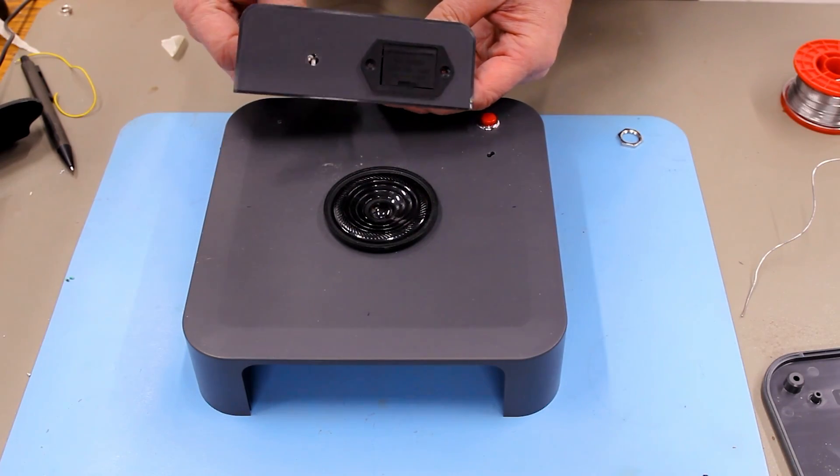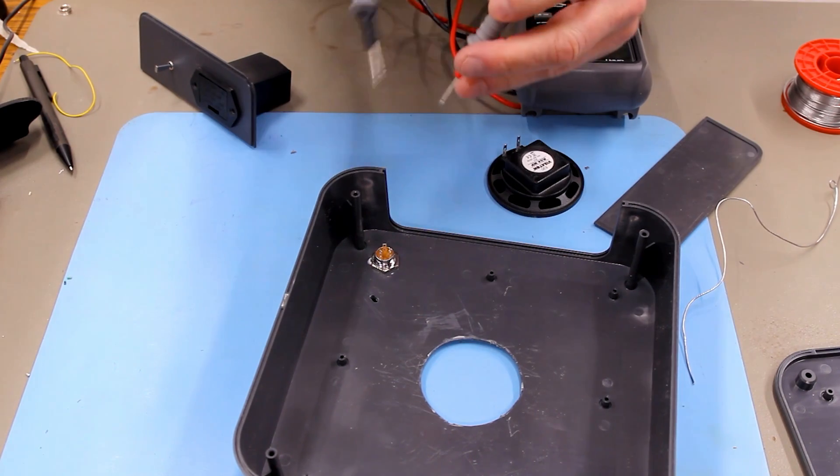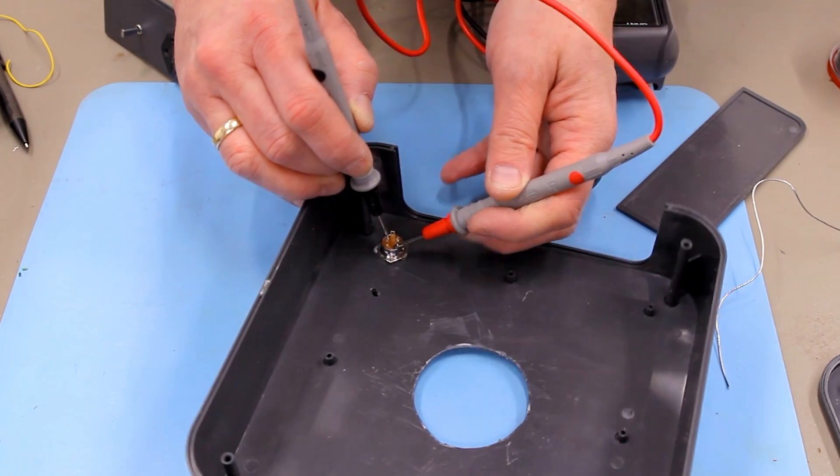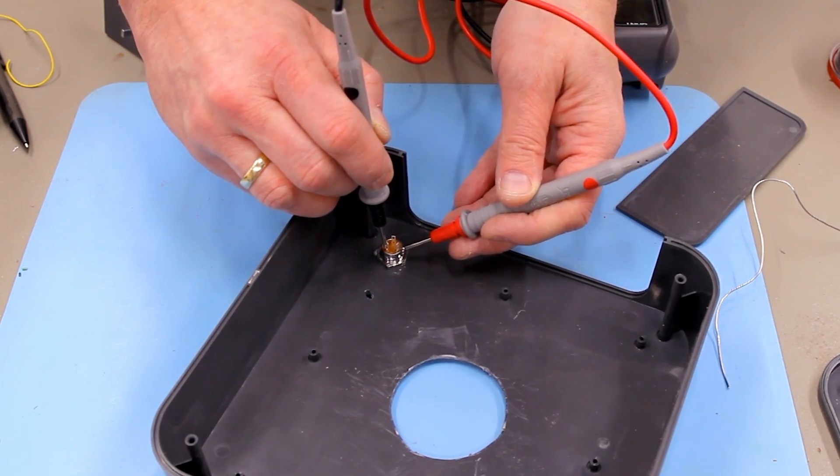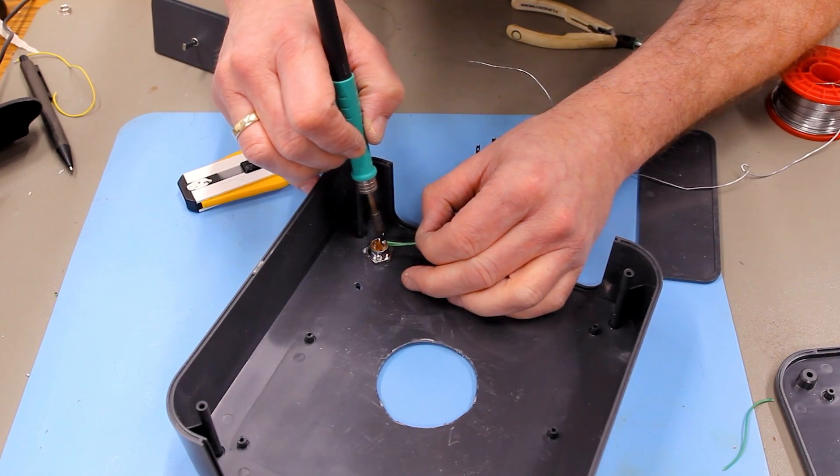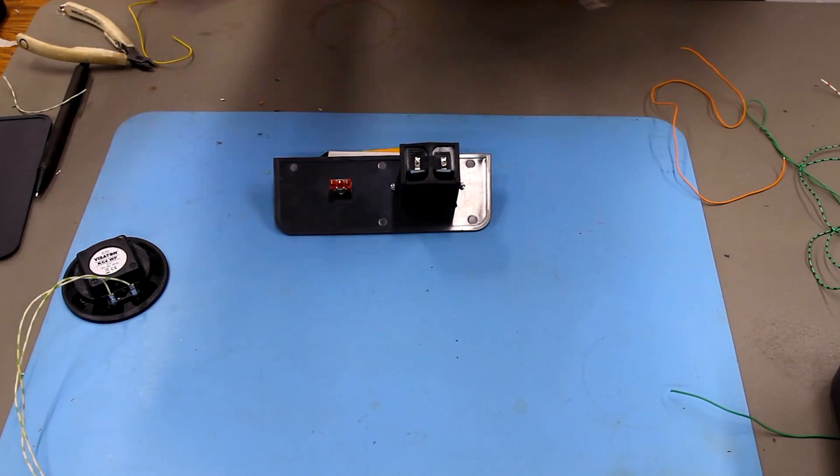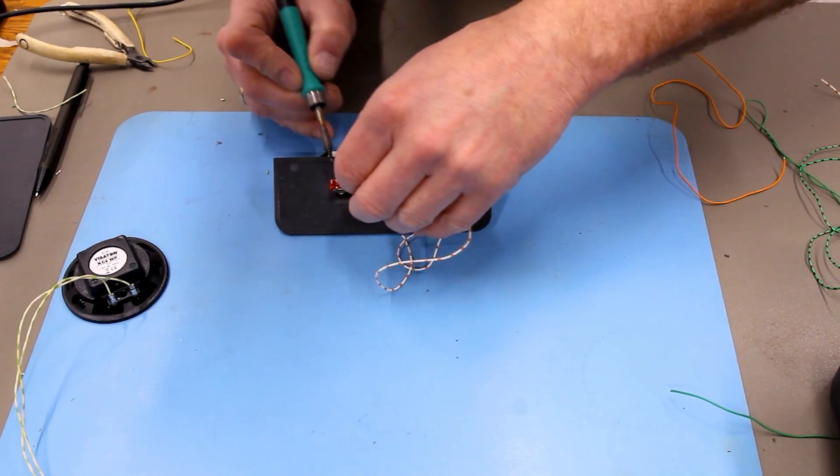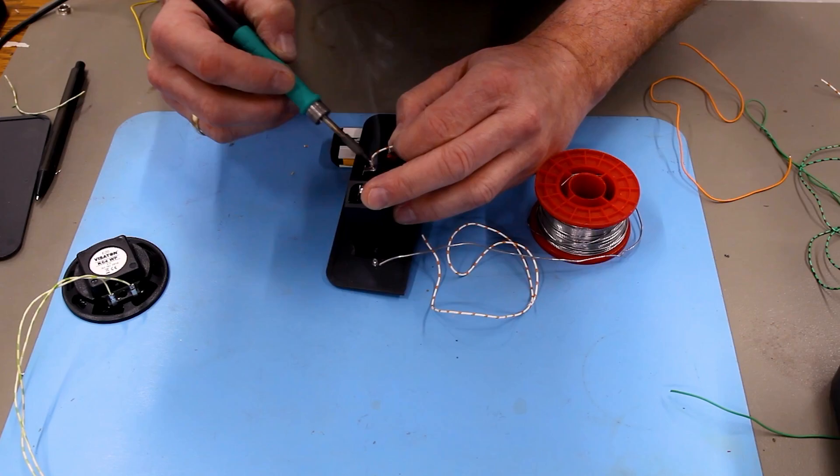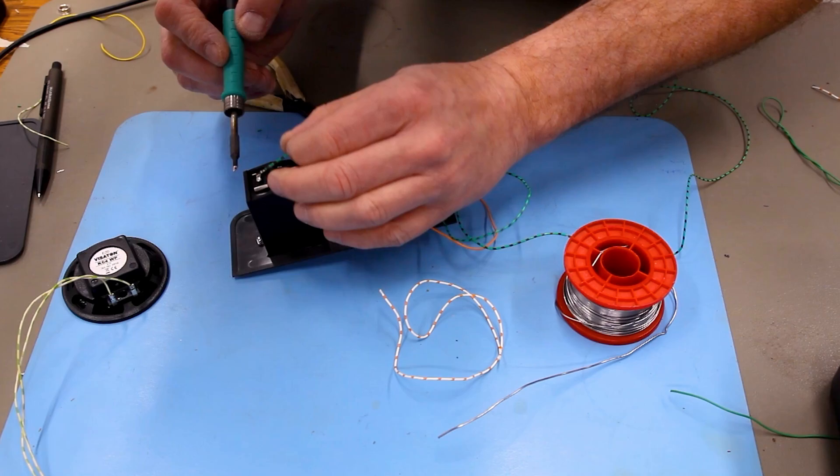I need to check this push button because it has normally open and normally closed contacts. Question is which is what, and I think we need those two, which means this one will not be used. I wired up the speaker. Now I'm going to wire our little battery compartment, connecting it to the switch. From the switch, the cable goes to the PCB later, and then we need a ground wire.